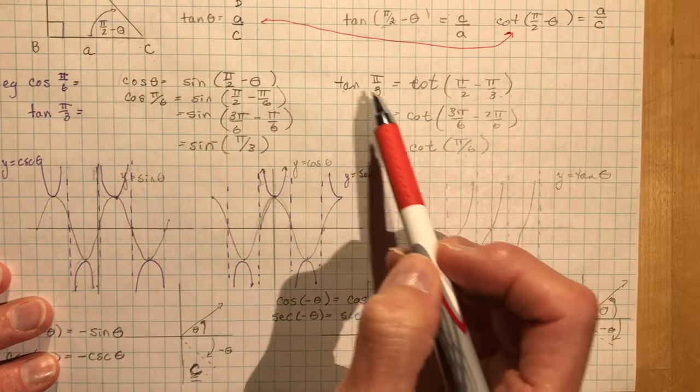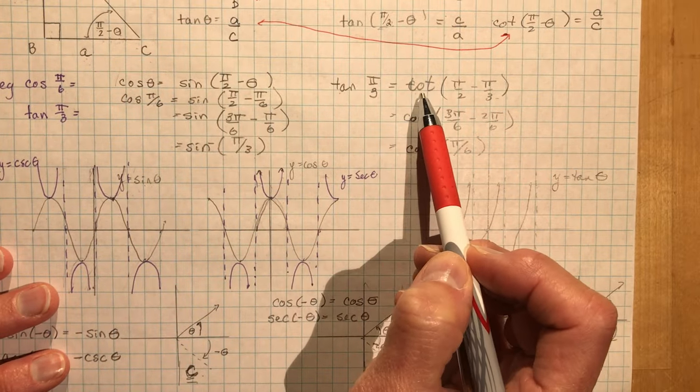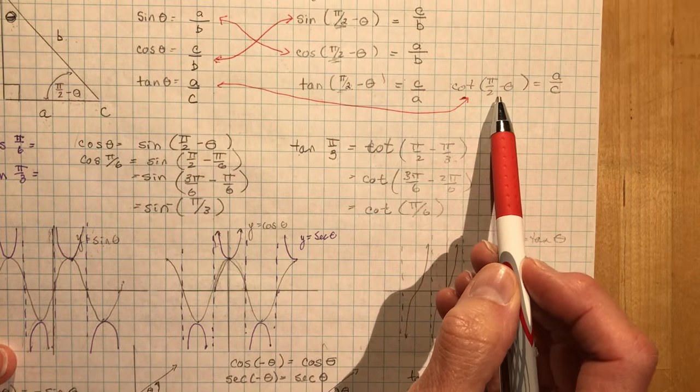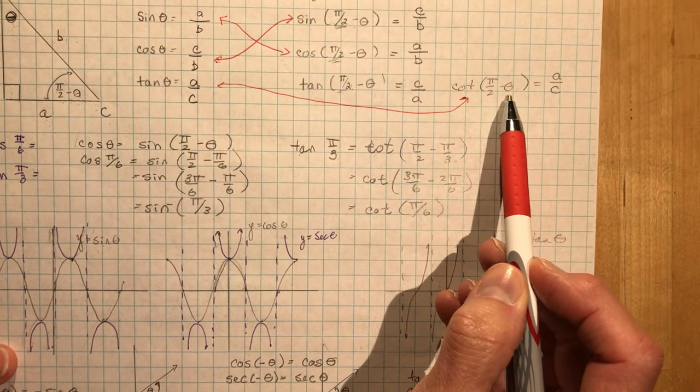So when you do tan, the first thing you write is cotangent. And the cotangent is pi over 2 minus the acute angle. So pi over 2 minus theta.